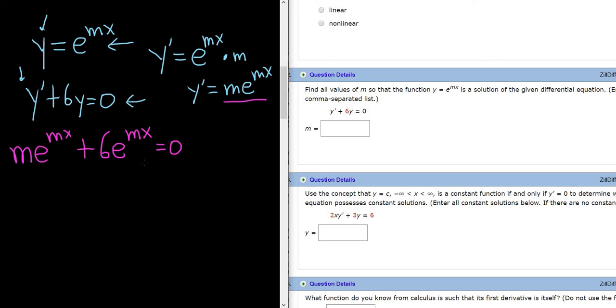And again, the question is to find m, so this equation has to be true. Now we can factor out an e to the mx. I love how it just works out, it's beautiful. So we get m plus 6, and that equals 0.